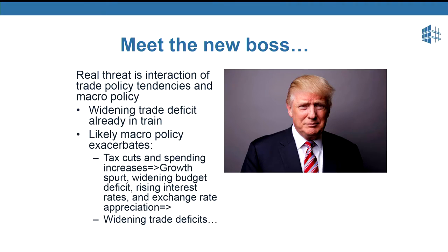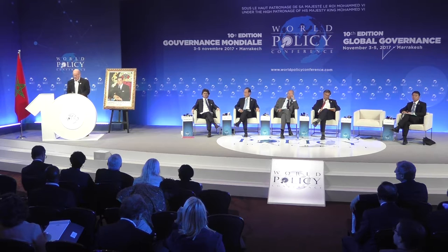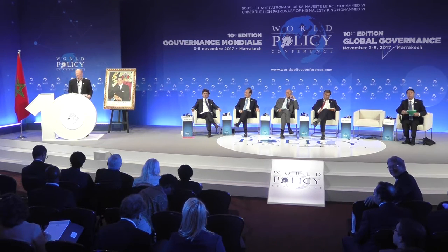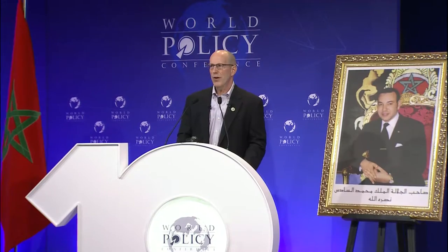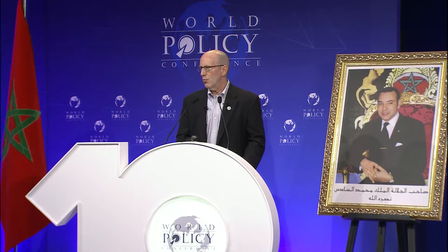The real threat, though, is the interaction of the macro policy and the trade policy. The United States, for a variety of reasons, is likely to adopt an expansionary fiscal policy. That's going to lead to a growth spurt, widening budget and trade deficits, and an appreciating exchange rate. And then you face the prospect of the Trump administration reaching for protection, trying to square the circle with that increasing trade deficit. What we could get is a very nasty version of the first Reagan administration — an administration that, in the infamous words of then-Secretary of Treasury James Baker, imposed more protection than any U.S. presidential administration since Herbert Hoover. This is a period well known for voluntary export restraints. The current USTR, Ambassador Lighthizer, was actually one of the negotiators and is well versed with this kind of action.